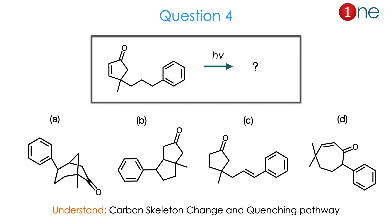Question 4. The starting material is a linear chain attached to a five-membered ring and a benzene ring. The five-membered ring contains a conjugated enone, and at the connected position there is one methyl group. You are using light. They ask you to find the product. Many products are possible — five-membered, six-membered, open chain, or ring-expanded. From the product and reactant, carbon skeleton changes definitely occur and the quenching pathway dictates the reaction. The answer is C.